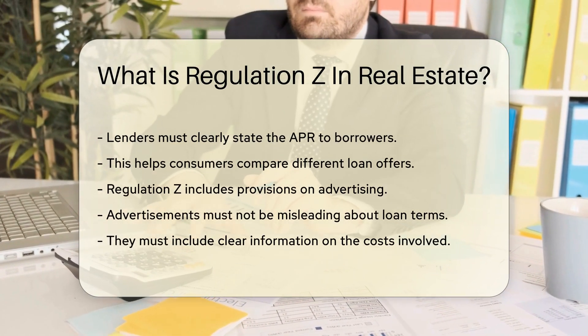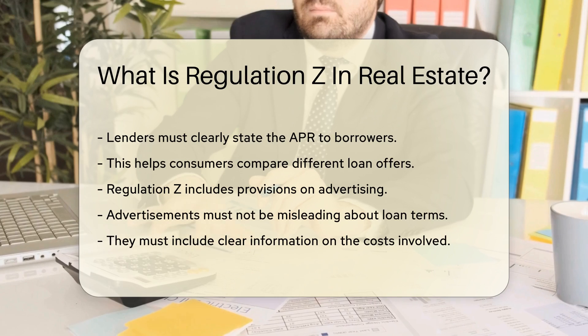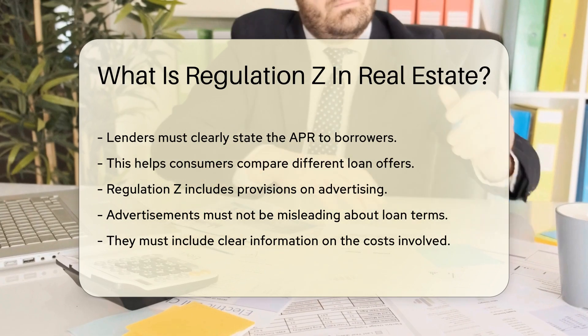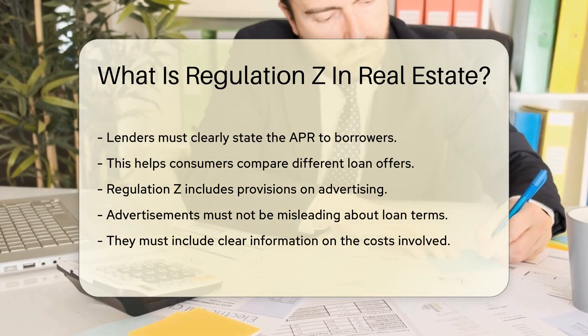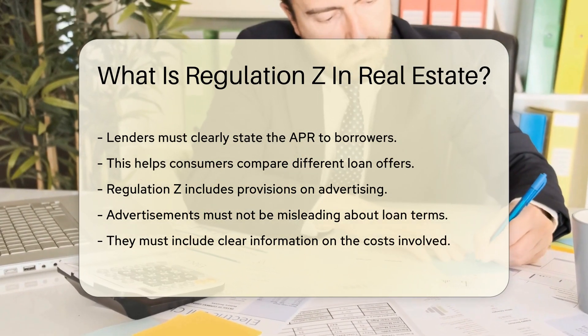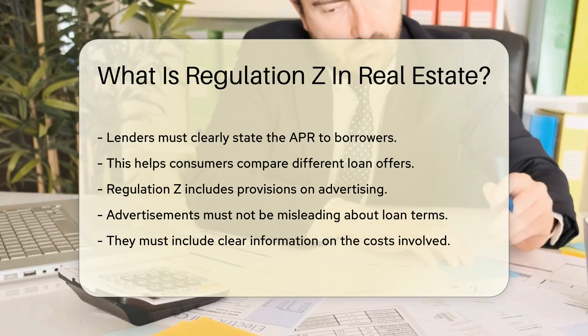Regulation Z also includes provisions on advertising. Advertisements must not be misleading about loan terms. They must include clear information on the costs involved.